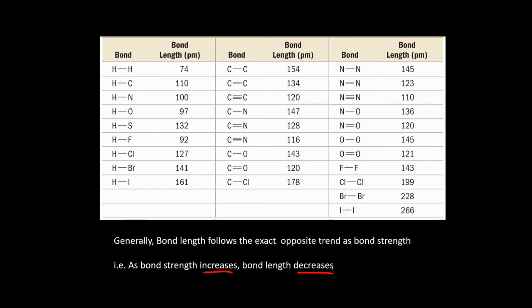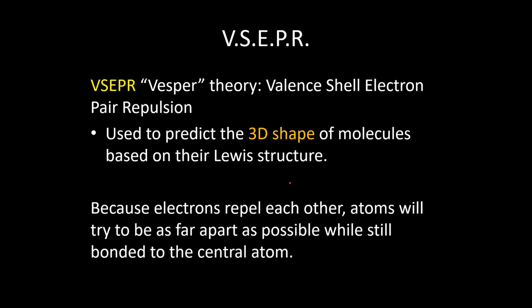As the bond length is going up, getting longer, the strength of the bond is decreasing. And so you can see here the opposite trend that we saw on the previous slide there. Going from single to double to triple bonds gave us more bond energy, but it is decreasing the bond length here. Because they're sharing more electrons, they're pulling each other in closer to one another, which is part of the reason why those bond energies are higher.